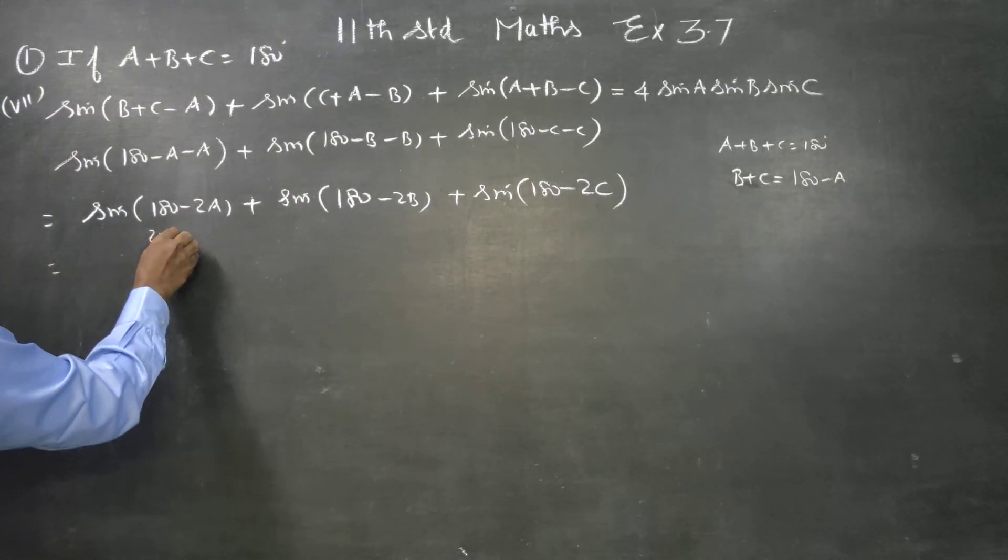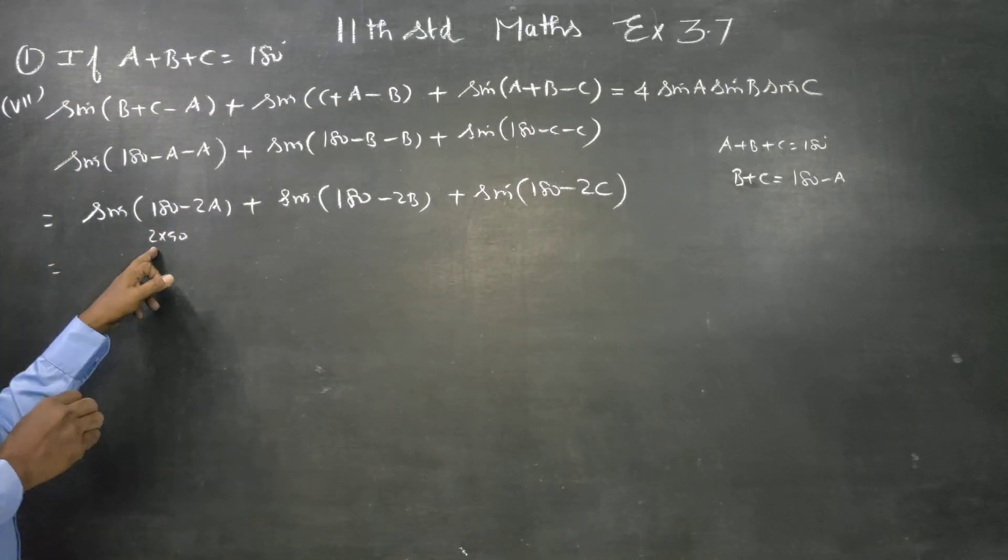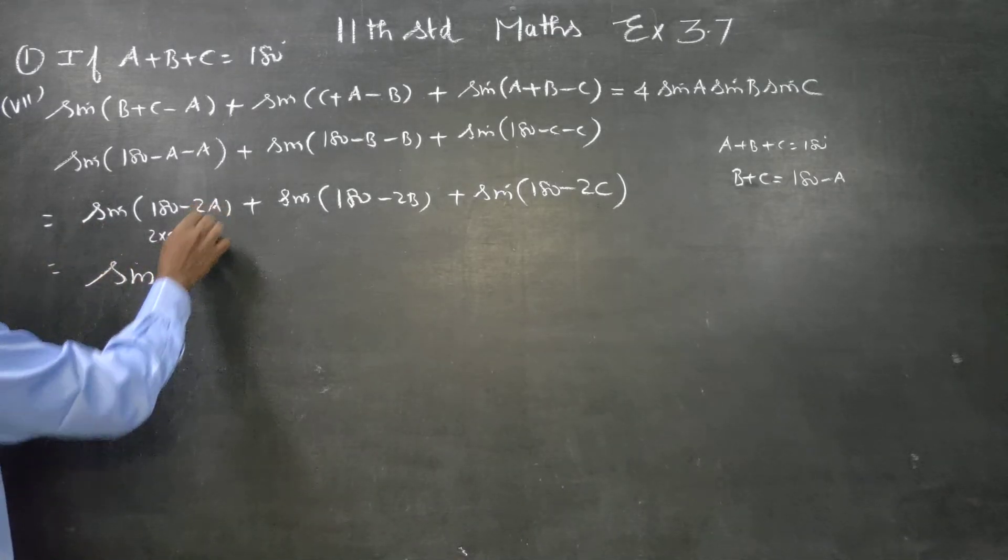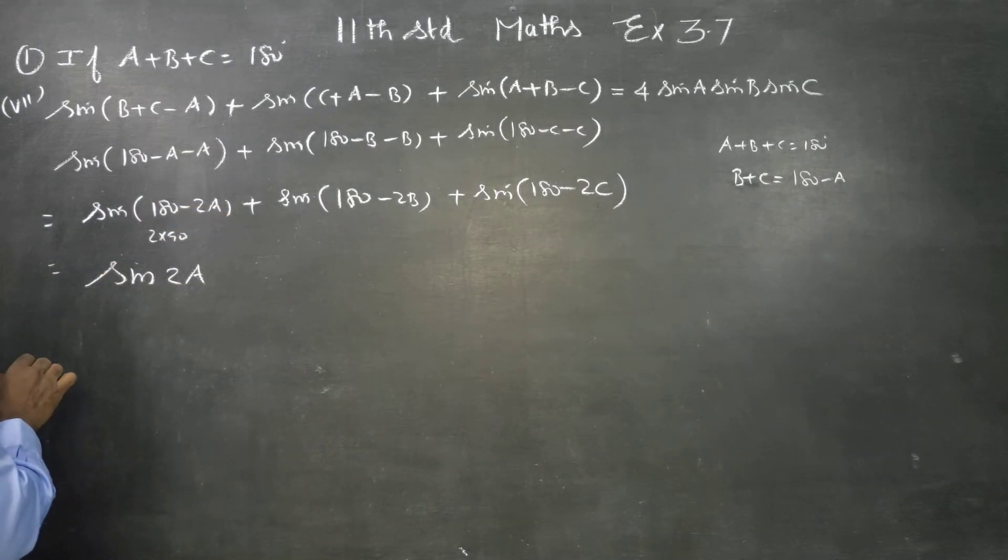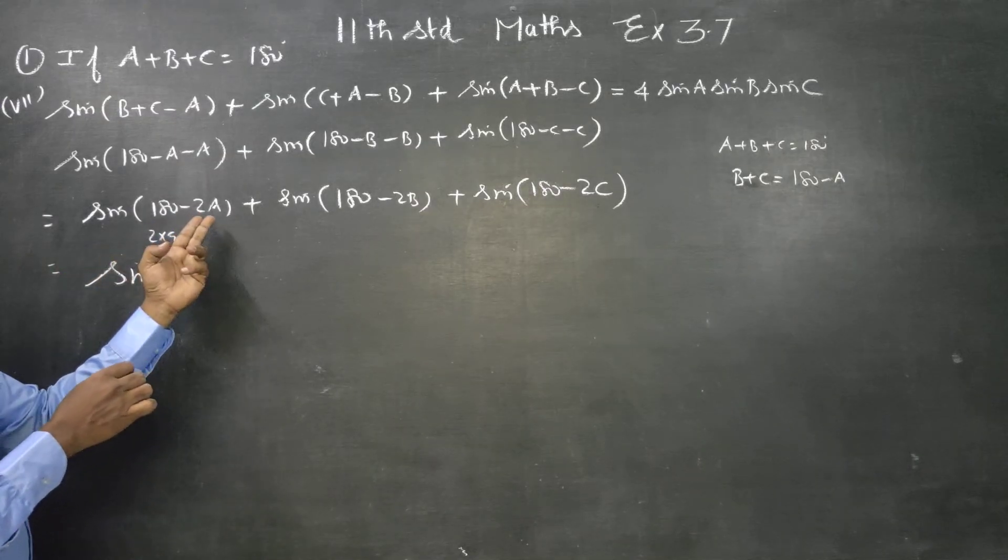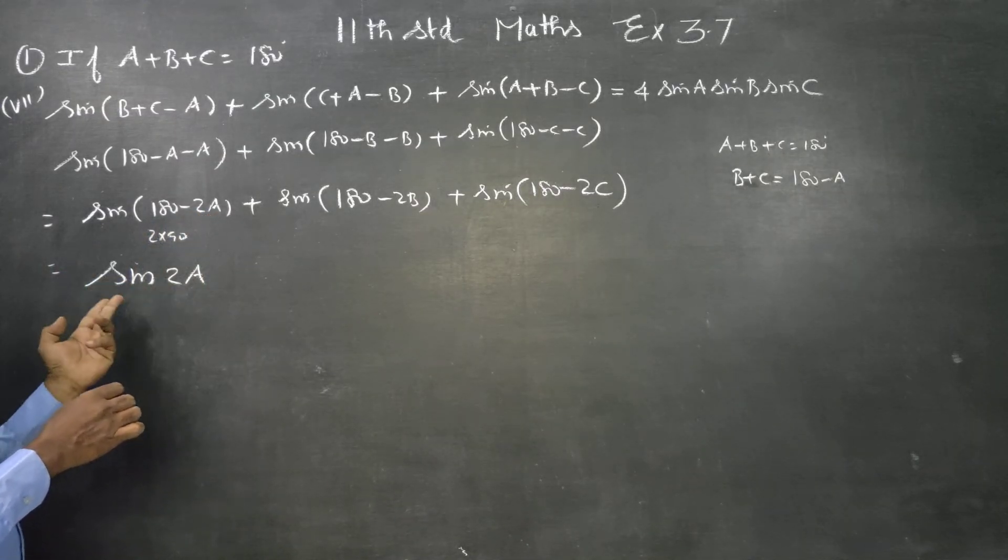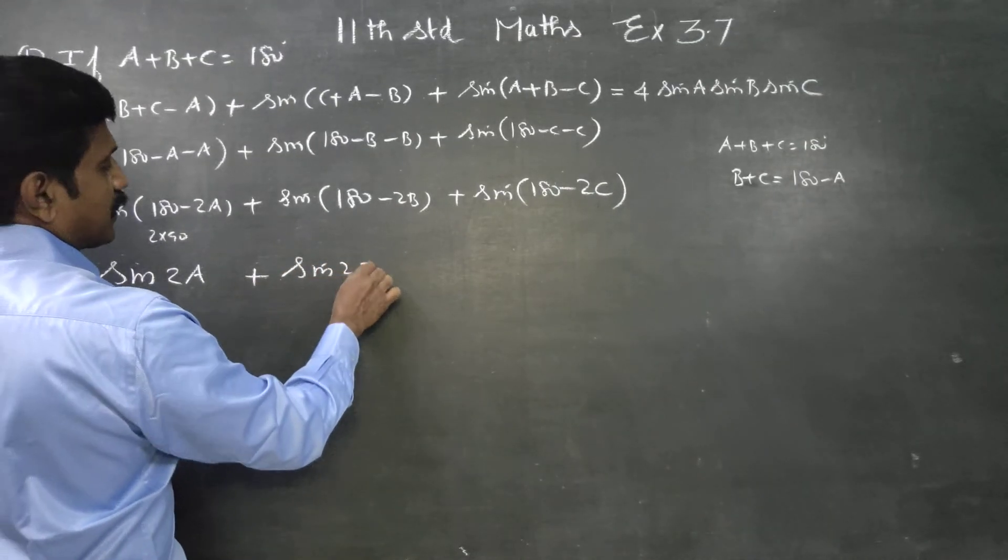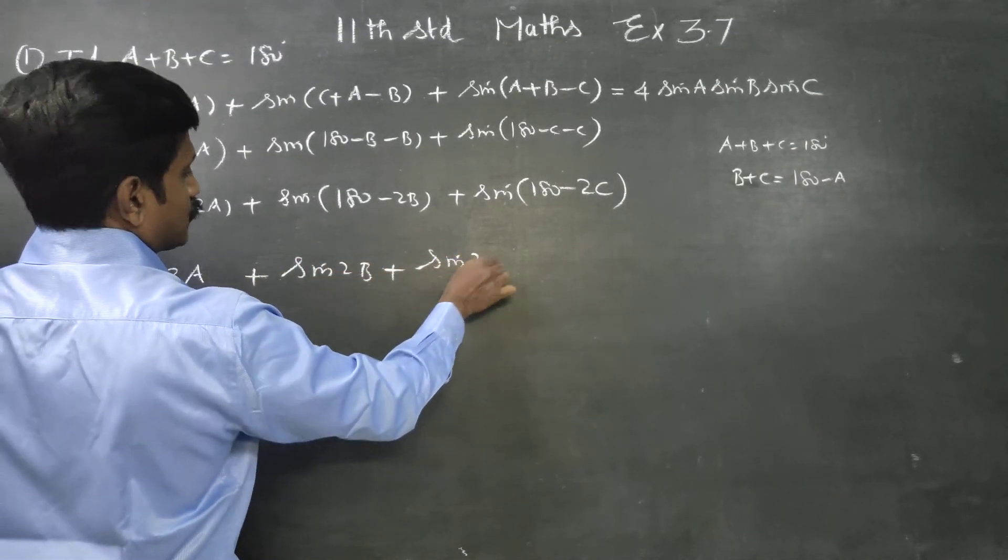Actually, this is 2 into 90. 2 into 90 is an even number, even number so it doesn't change, sin will remain, 2A will remain. Second quadrant, 2 into 90 minus something is second quadrant. Second quadrant, sin is positive. So it becomes sin 2A. Similarly, this becomes sin 2B, this becomes sin 2C.